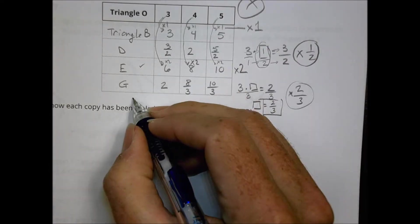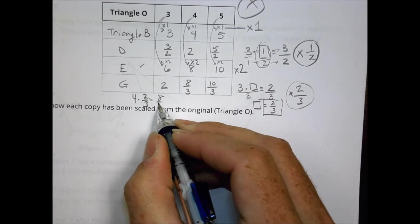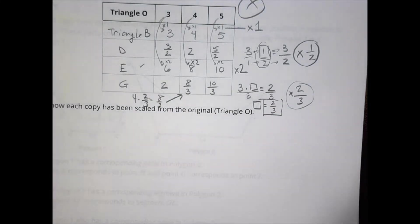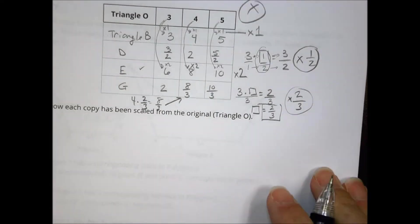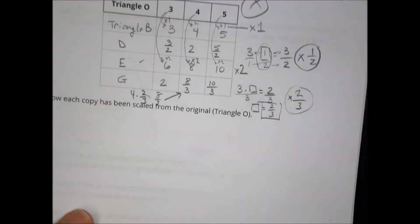And you can try that out. If I take four, four times two thirds, four times two is eight. And the three stays on the bottom and it matches there. And the same thing for G. So that's how you can tell that it's a copy and it's been scaled from the original. And that was what we did in our lesson.